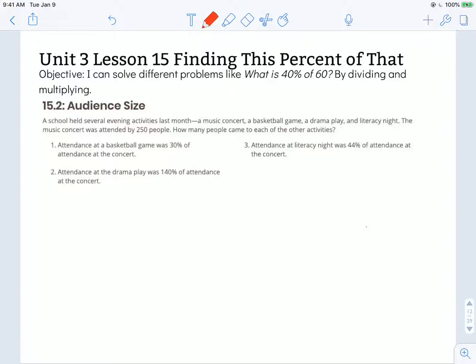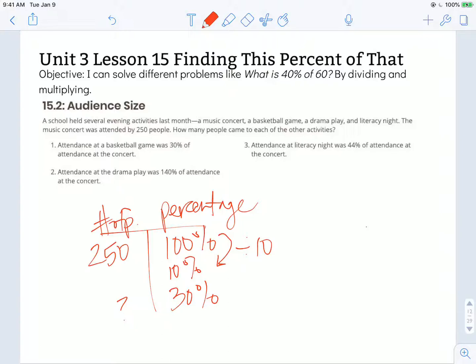Let's make a T-chart here. So let's put the number of people and the percentage. At the music concert, there were 250 people, which represented 100% of the people that went to the music concert. At the basketball game, there were 30% of the people in attendance, and we want to know how many people that is. So if I want to get to 30%, one thing I can do is I can take this 100% and break it down into 10% because that's easily done by dividing by 10. I'm going to do the same thing to the left hand side of my table. I'm going to divide it by 10 as well.